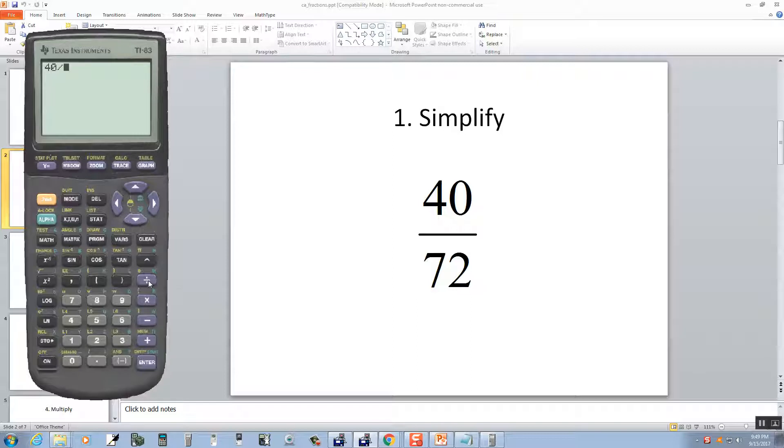So I do 40 divided by 72, and then I'll push my Enter. Now when you come up with a decimal, then you want to push your Math button right here, and Enter, Enter. So you press Enter twice. And that would be our answer.